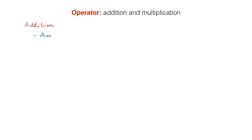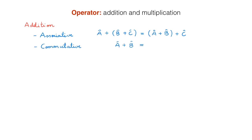The two most important mathematical properties of operators that are useful when solving quantum mechanical problems are addition and multiplication. Addition is associative: A plus B plus C equals A plus B plus C. Addition is also commutative: A plus B equals B plus A.